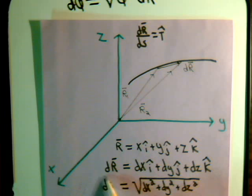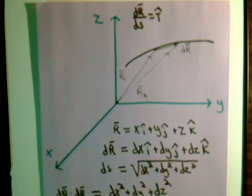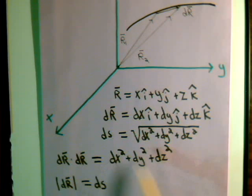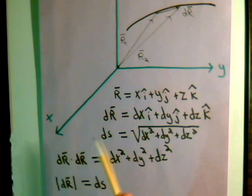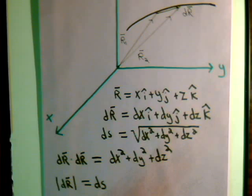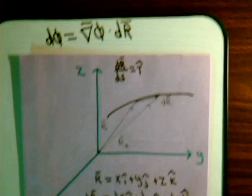Well, if we take the dot product of this with itself, we have DX squared plus DY squared plus DZ squared. So the magnitude of DR, that's the square root of this, which is a differential arc length. So this DR divided by DS is a unit vector, but it's a unit vector that is tangent to the curve.